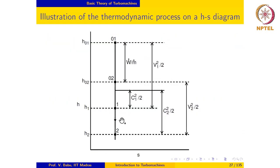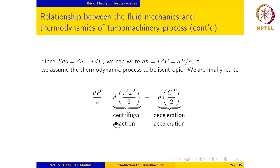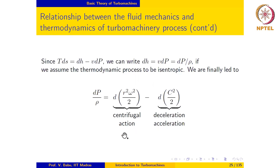Let us revisit the equation relating pressure change across the rotor and change in flow properties along the streamline. This expression states that any change in pressure along the streamline is due to a change in u squared over 2 and a change in c squared over 2, where the first term captures the centrifugal effect and the second term captures deceleration or acceleration of the fluid in the blade passage.